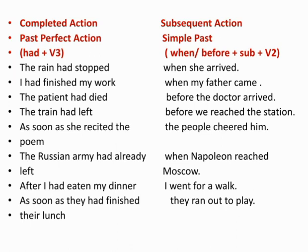She had recited the poem — the people cheered her. Next: the Russian army had already left when Napoleon reached Moscow. Before Napoleon's arrival, the Russian army had already left. So the first action is the army leaving — 'had left' in past perfect — and Napoleon reached later, which is in simple past.